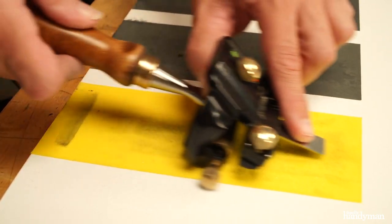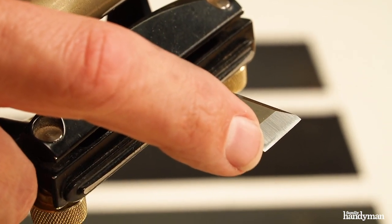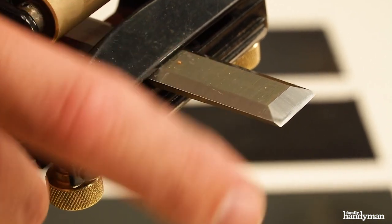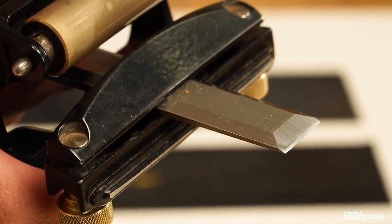I think you can see it in the camera, that little millimeter-wide micro bevel at the leading edge of that chisel.